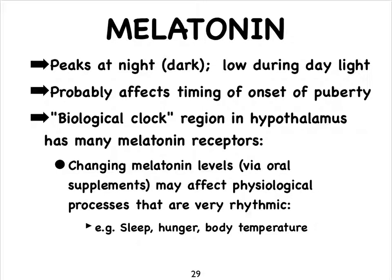Melatonin also seems important in delaying the onset of puberty, helping it start at a more appropriate time. There are many melatonin receptors in our hypothalamus, so by supplementing we can influence the biological clock in the hypothalamus — the clock that regulates our sleep-wake cycle, but also dictates when we're hungry, when we're thirsty, and regulates body temperature. In the next video, we'll start looking at the pituitary gland, often referred to as our master gland.